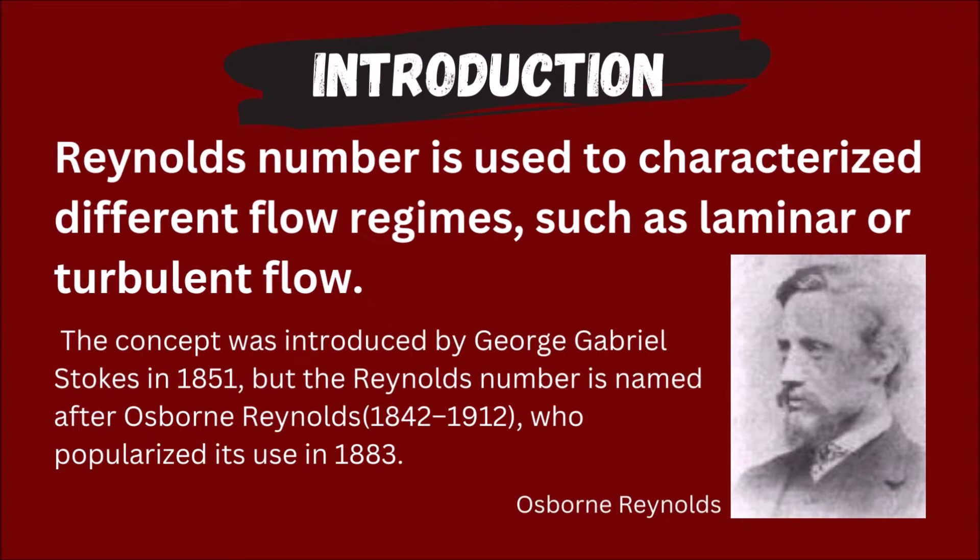Reynolds number is used to characterize different flow regimes, such as laminar or turbulent flow. The concept was introduced by George Gabriel Stokes in 1851, but the Reynolds number is named after Osborne Reynolds, who popularized its use in 1883.